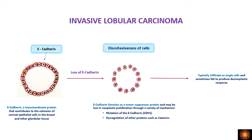Moving to the special types of invasive carcinomas — lobular carcinoma. The main pathogenesis is loss of E-cadherin, a transmembrane protein maintaining cell adhesion. When E-cadherin is lost, adhesion is lost and the tumor cells become discohesive. Because of this, tumor cells are present as single cells and do not form a glandular pattern in lobular carcinoma.